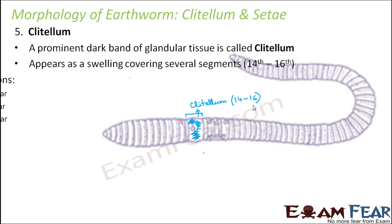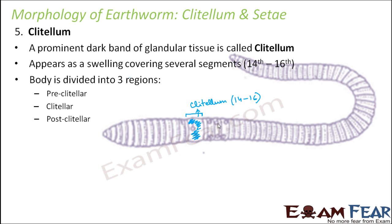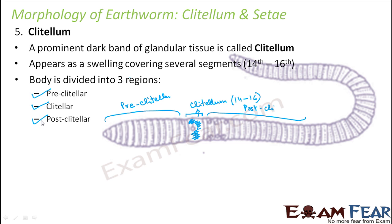Based on the presence of the clitellum, the body of the earthworm is divided into three regions: pre-clitellum, clitellum, and post-clitellum. This classification is why the earthworm falls under the group Clitellata due to the presence of the clitellum. The clitellum plays a very important — in fact a major — role during the process of reproduction.